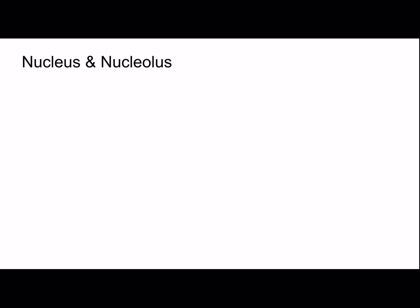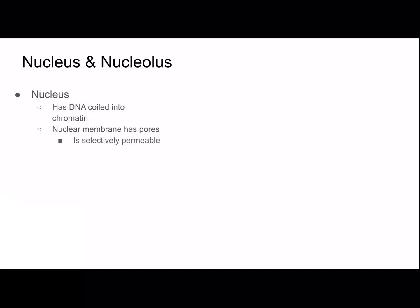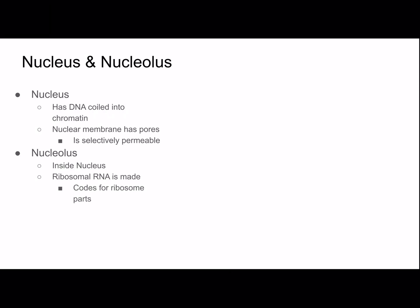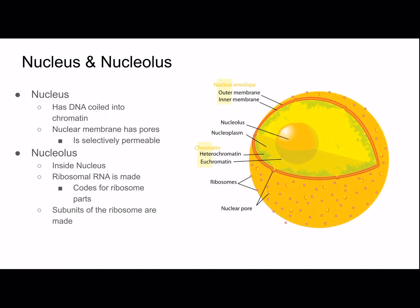Let's start with the nucleus and the nucleolus. The nucleus has DNA coiled into chromatin, and the nuclear membrane has pores — this is important because it's selectively permeable, choosing what can come in or go out. The nucleolus is inside the nucleus; this is where ribosomal RNA is made, which codes for the ribosome parts, and this is also where the subunits of the ribosome are made. Here's a picture of the nucleus — you can see the nucleolus inside of it and the nuclear pores, which are important for transportation of materials. Chromatin is the tightly coiled DNA that you can see there.